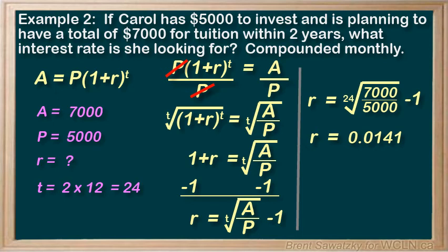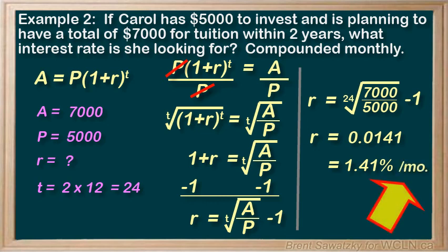And converting that to a percent, move the decimal over twice, 1.41%. Now, that seems awful small. So one thing to remember, normally when they ask for the interest rate, they want the annual interest rate. And remember, in our equation, the r is the interest rate per compounding period, which was, looking back, 1 month. So to get the annual rate to answer this, we better multiply our r by 12. Annual interest rate of 16.9%.